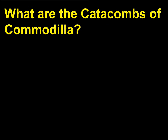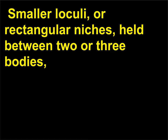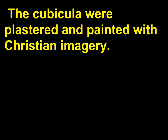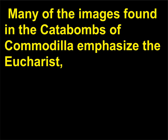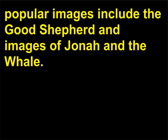What are the catacombs of Commodilla? These catacombs were used for Christian burials as early as the 4th century. Smaller loculi, or rectangular niches, held between two or three bodies, but larger and more expensive cubicula held the sarcophagi of wealthier families. The cubicula were plastered and painted with Christian imagery. Many of the images found in the catacombs of Commodilla emphasize the Eucharist — the ritual consumption of bread and wine, the body of Christ. Popular images also include the Good Shepherd and images of Jonah and the whale.